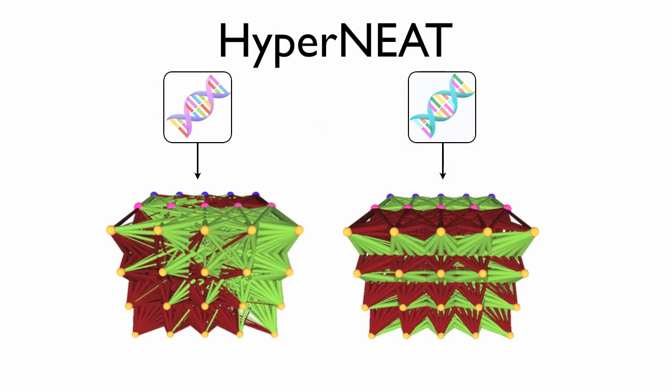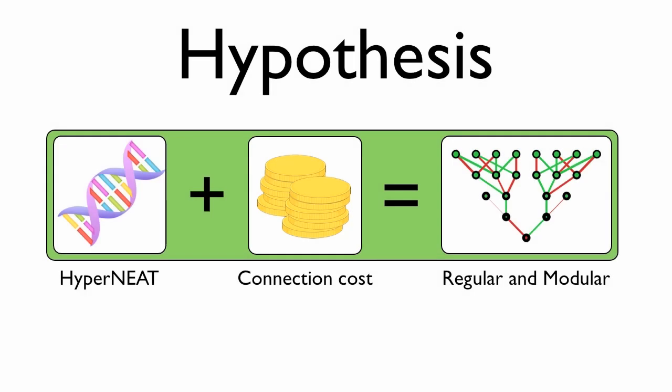For our research, we made use of the powerful HyperNEAT algorithm, which is highly effective at creating regular artificial neural networks. Now, it has already been shown separately that a connection cost leads to modularity and that HyperNEAT produces regular networks.